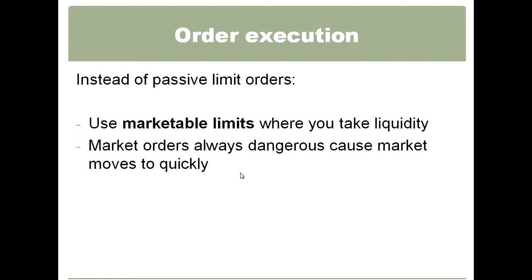What I like to use instead are marketable limit orders — where you actually take liquidity. Market orders are always dangerous; you might send a market order to buy the stock thinking you're going to get 25 and fill at 25.10 or even worse. So I don't want to use market orders. A marketable limit order is just an aggressively priced limit order. If the stock is offered at 25, I might put my bid at 25, or if I really want it, put my bid at 25.01, knowing that I'm probably going to lift the offer. If the quote moves quickly I may miss it, but I'm not going to be filled at a horrible place. I tend to take liquidity when I can — that's the better thing.